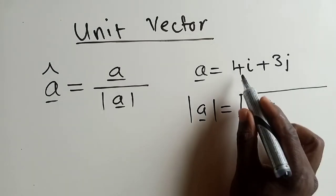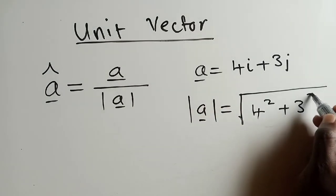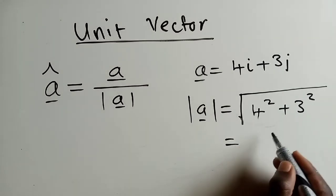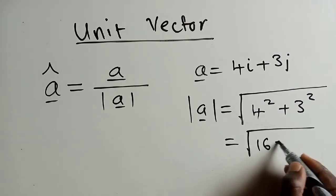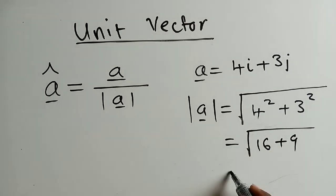4 squared gives us 16, 3 squared gives us 9, so we have the square root of 25, which equals 5. So the magnitude of vector a is 5. Once you find that magnitude, you can just plug it in.